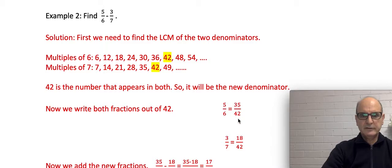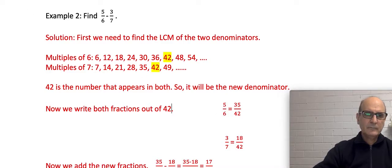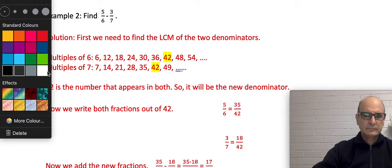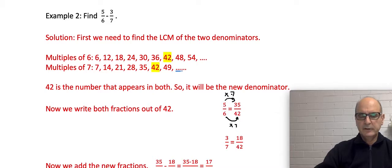Each fraction now needs to be written out of 42. For 5/6, I need to write it with denominator 42. I ask: what number do I need to multiply 6 by to get 42? That number is 7, since 6 times 7 equals 42. I then multiply the numerator by the same number: 5 times 7 equals 35. So 5/6 becomes 35/42.